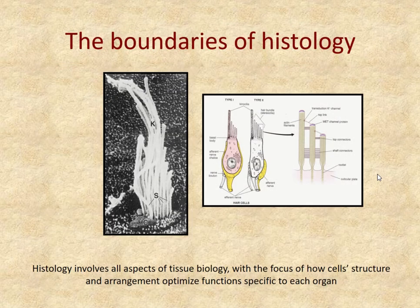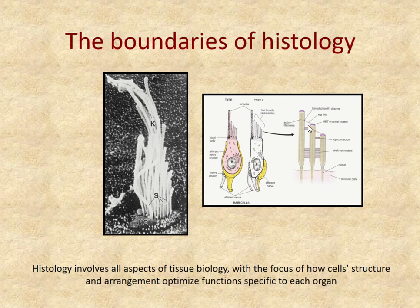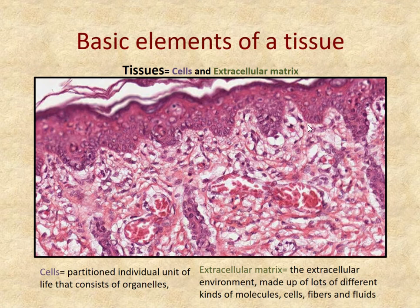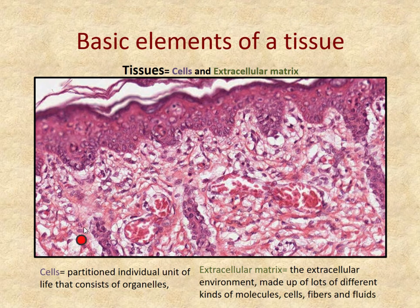Histology really can involve cell biology, some physiology, as well as some biochemistry. We don't normally only talk about structure — we also talk about the function of those structures so you have a reference for why they are important. It's very hard to learn structure without understanding some of its function. The underlying foundation is that the basic elements of a tissue include cells, usually with a purple or bluish-purple nucleus, and extracellular matrix — fibers and ground substance that exists between the cells.